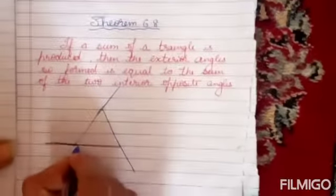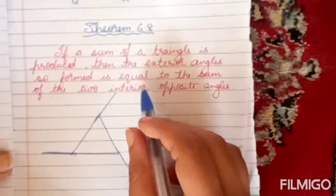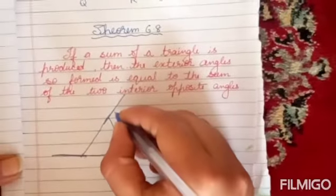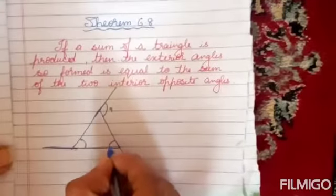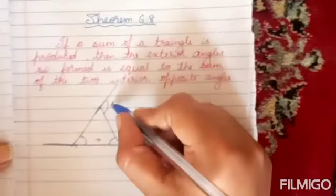Then exterior angle so formed equals to the sum of interior opposite angle. If you want to know this means, then you should add these two interior angles. Then you are going to get this exterior angle.